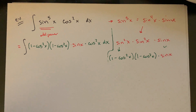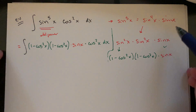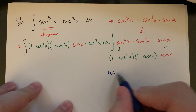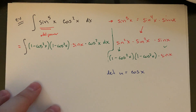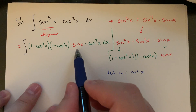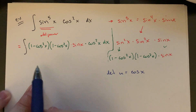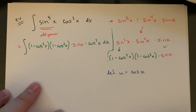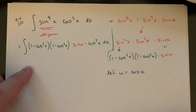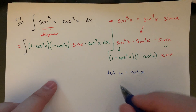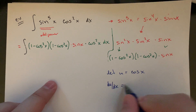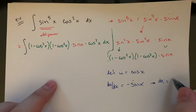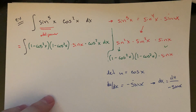Whatever function had the odd power, we take the other as our u. So let u = cosine x. The sine x is the one leftover, and everything else is in terms of cosine. The derivative: du/dx for cosine is negative sine x, so we carry that negative through. Therefore dx = du over negative sine x.